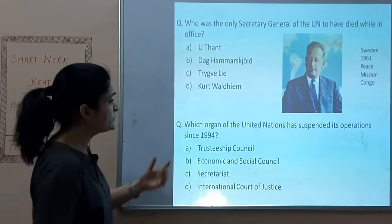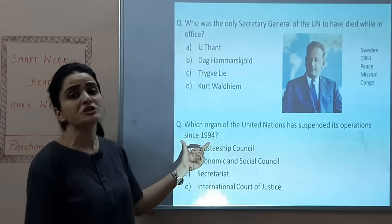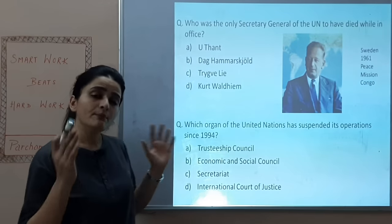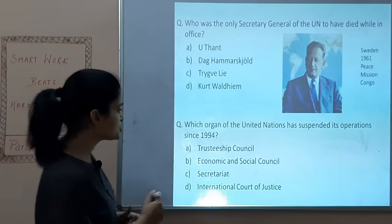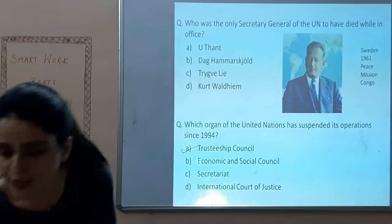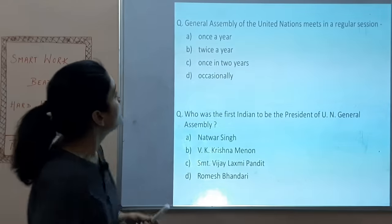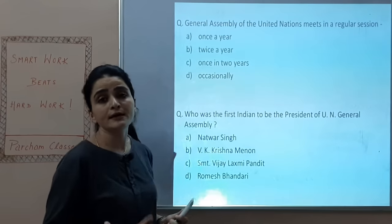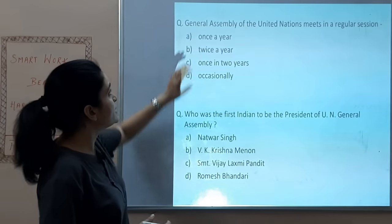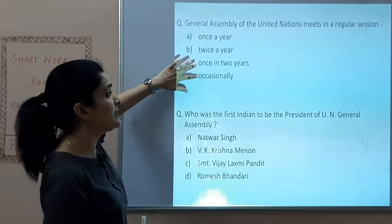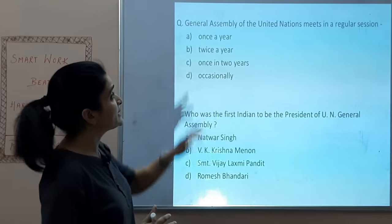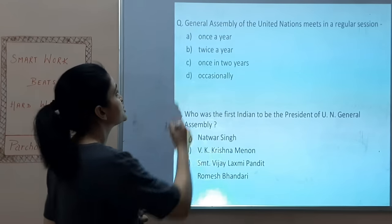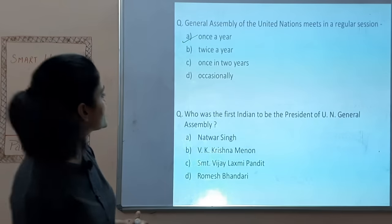Which organ of the UN suspended its operations in 1994? Trusteeship Council — we already know that. When does the UN General Assembly meet in its regular session? Once a year — in September. Correct!